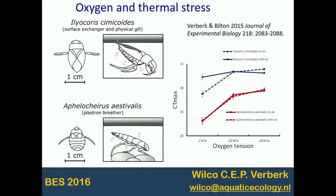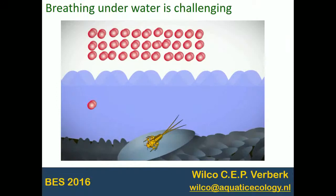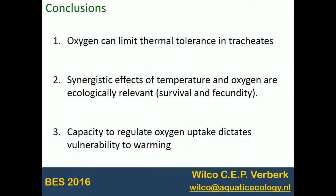The difficulty animals have in extracting oxygen — whether they rely on aquatic breathing or aerial gas exchange — might go a long way in predicting vulnerability to climate change, mainly because it's really difficult to breathe in water. In summary: oxygen can also limit thermal tolerance even in insects and tracheates; there's a strong synergistic effect in field conditions between temperature and oxygen; it probably pertains to fecundity losses rather than survival; and the capacity to regulate oxygen uptake might dictate vulnerability to warming.